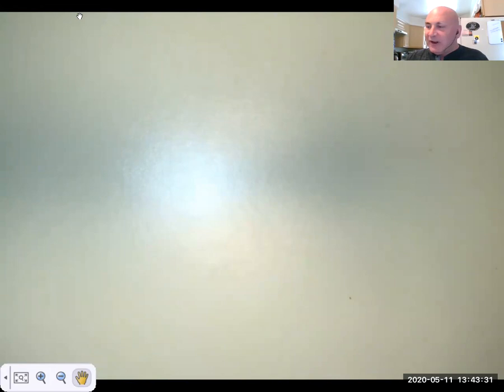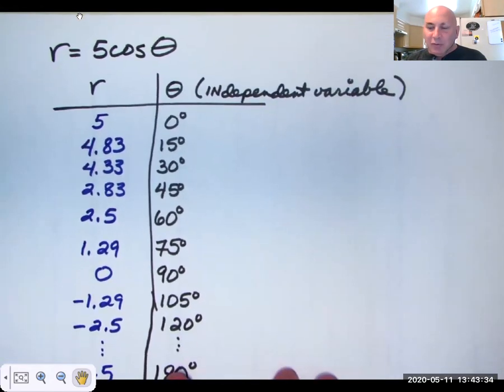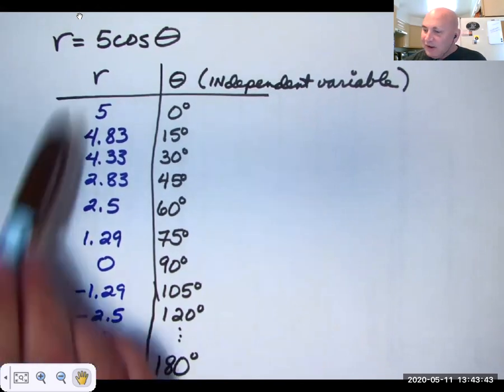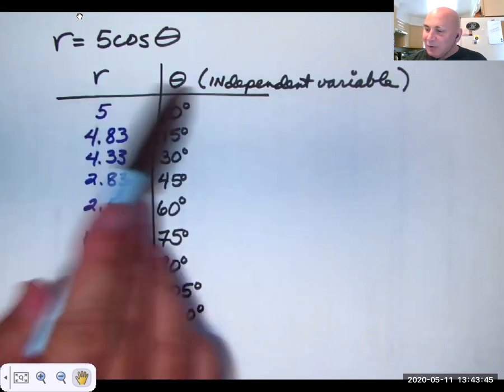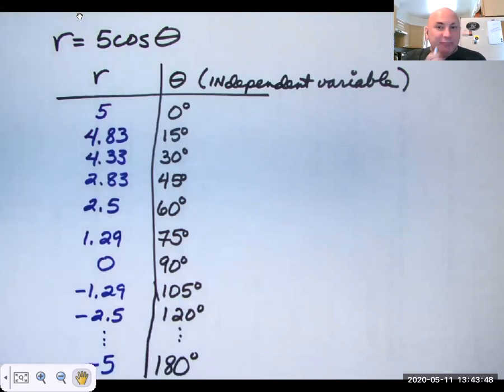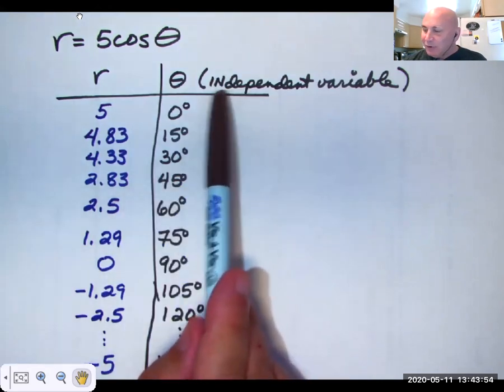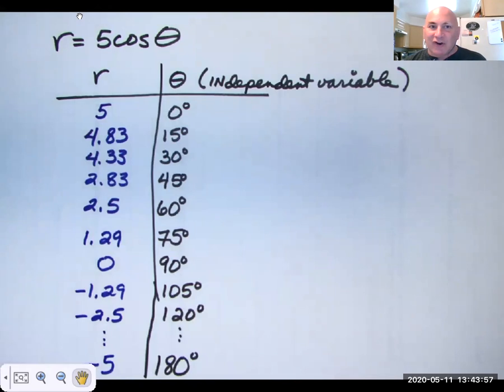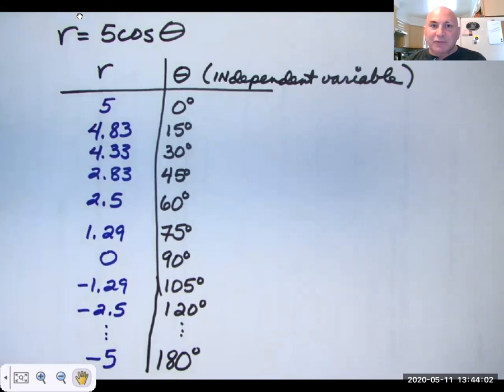So if you want to, you can do an input output table, also known as a T table, where you have your independent variable and your dependent variable. What's interesting is that when we've always done rectangular coordinates, X was the independent variable and Y was the dependent variable. But in polar form, even though we do it R theta, theta is usually our independent variable. You choose theta. The equation chooses R.